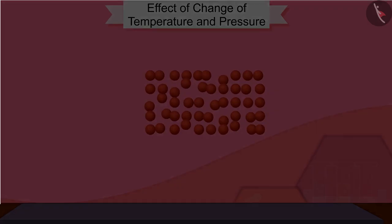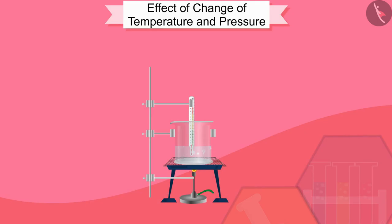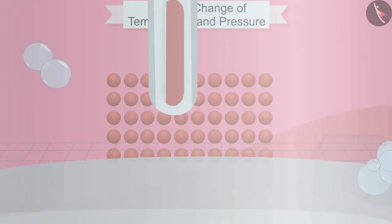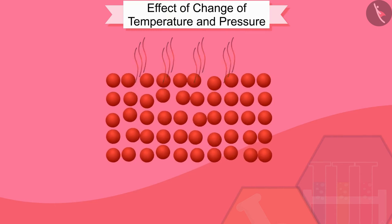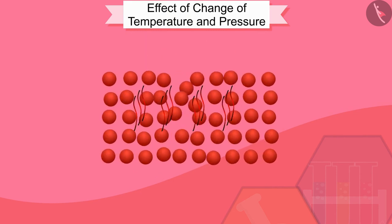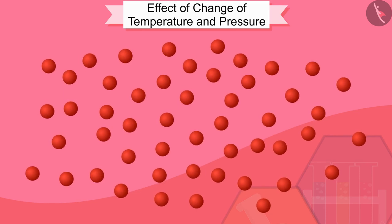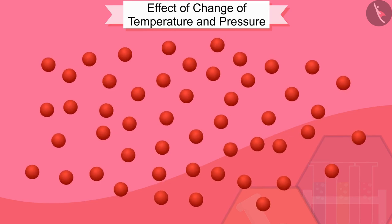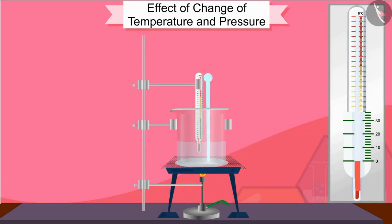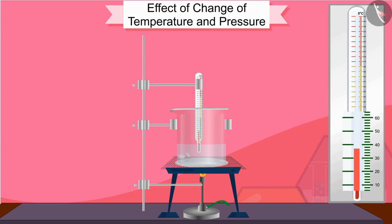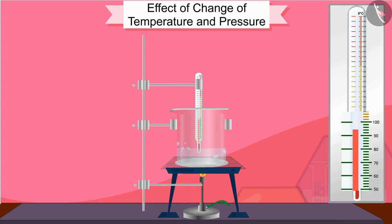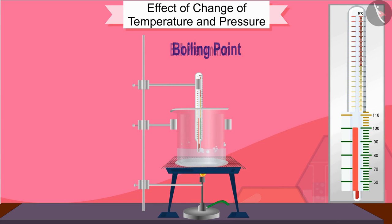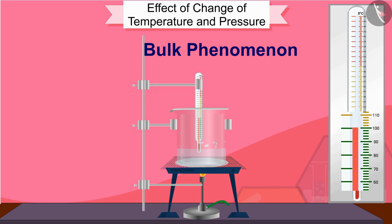Now let us see what happens during the change from water to water vapor. When we supply heat energy to water, particles start moving even faster. At a certain temperature, a point is reached when the particles have enough energy to break free from the forces of attraction of each other. At this temperature the liquid starts turning into gas. The temperature at which the liquid starts boiling at atmospheric pressure is called its boiling point. Boiling is a bulk phenomenon — particles from the bulk of the liquid gain enough energy to change into the vapor state.